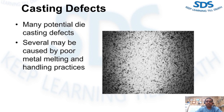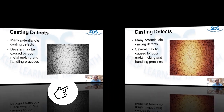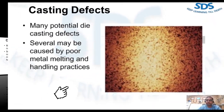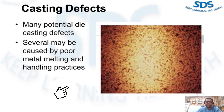While there are many potential casting defects, several may be caused by poor metal melting and handling practices. This figure is a photomicrograph of 380 aluminum alloy at 100x showing the typical structure of clean metal. The sample was cast at 1200 to 1210 degrees Fahrenheit — this is the structure that should be found if melting and handling practices are good.